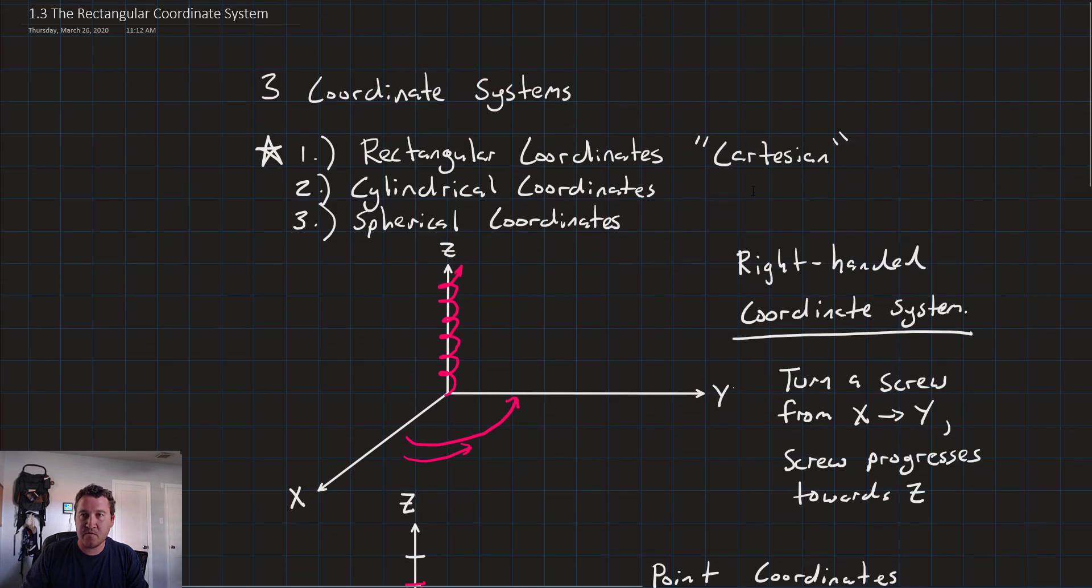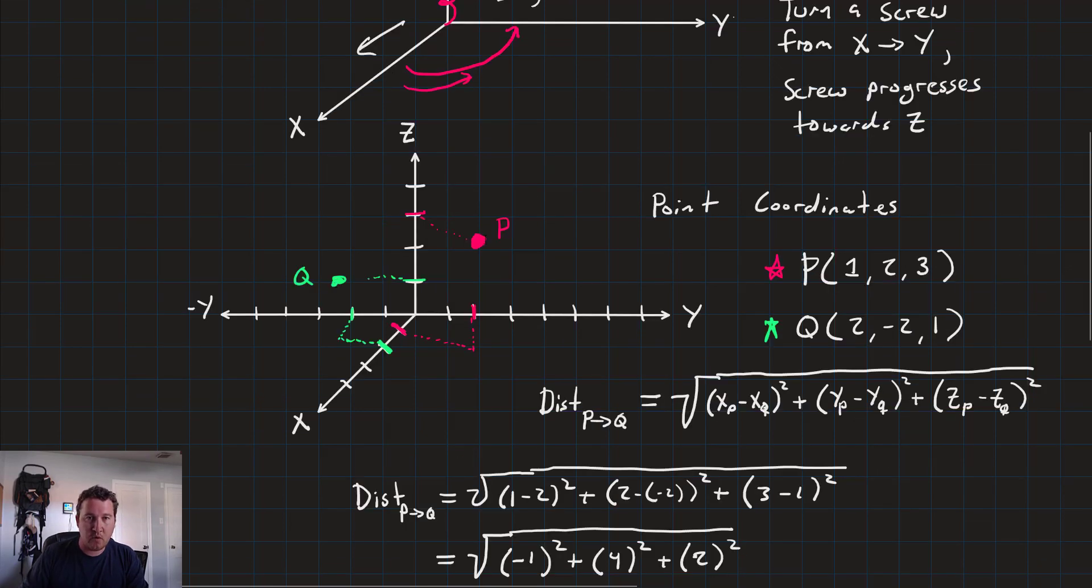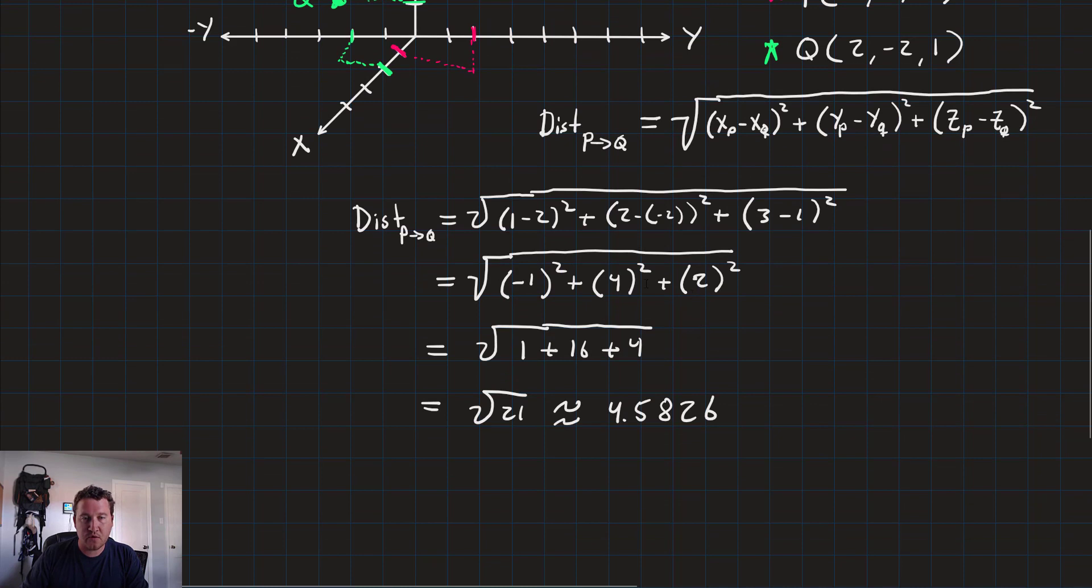So, that's all there is for this lesson. We looked at the rectangular coordinate system. Specifically, we talked about the fact that it's the right-handed coordinate system. We talked about how to draw points on our three-dimensional rectangular coordinate system. And most importantly, we calculated the distance between these points in three-dimensional space using this implementation of Pythagorean theorem. There we go. If you have any questions, please let me know, and I'll see you guys in the next lesson.